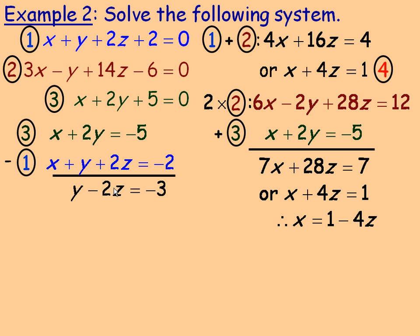So solving for y here and rearranging, bringing the negative 2z over, we get y equals negative 3 plus 2z. So we have x in terms of z and y in terms of z, and then we can write the parametric equations.